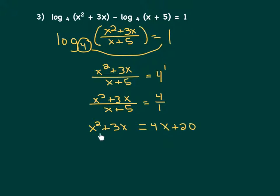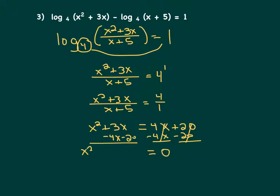Because we have an x squared in our equation, we're going to get everything to one side. So let's subtract 4x and subtract 20. On the right, everything cancels. On the left, we have x squared, positive 3x minus 4x is negative x, and then minus 20. Factoring this, we wind up with (x minus 5) and (x plus 4) equal to zero.